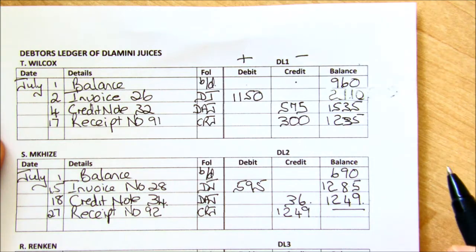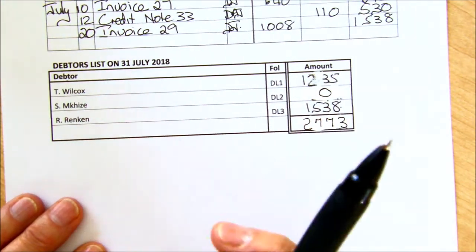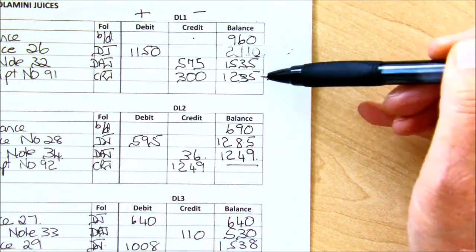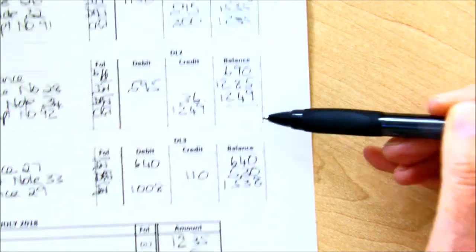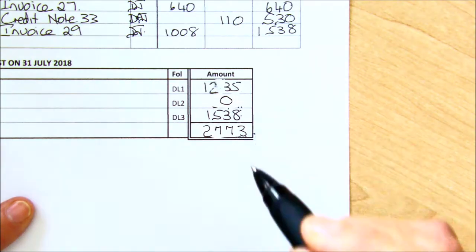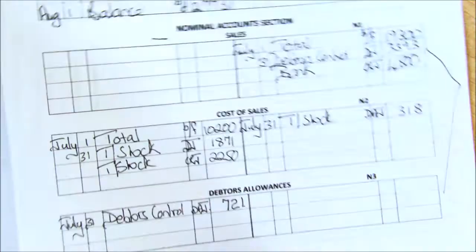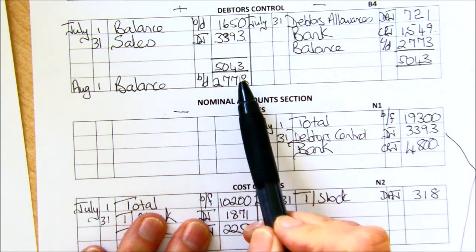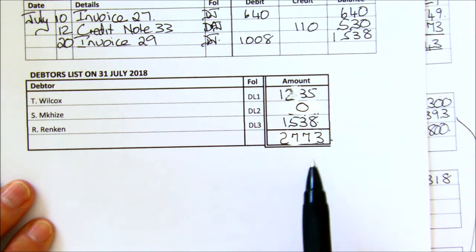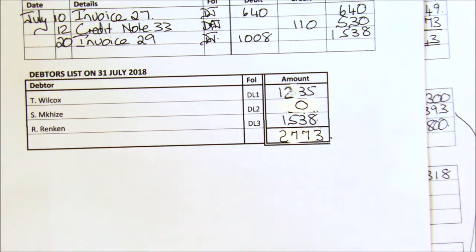Finally, we draw up what we call a debtor's list — it's nothing more than a list of the three debtors that we've got in this business, with their final balances. So he owed 1235, he owes nothing, he owes 1538. We total that up to see what your debtors owe you. And here's where the control comes in — very importantly, that amount must agree with the debtors' control. Remember, your debtors' control is the account where you put the totals of all your debtors. The individual amounts go to the individual debtors, so your debtor's list and your debtors' control account must agree. It's another one of those internal controls brought into the business to check.